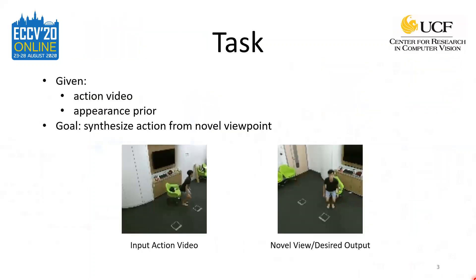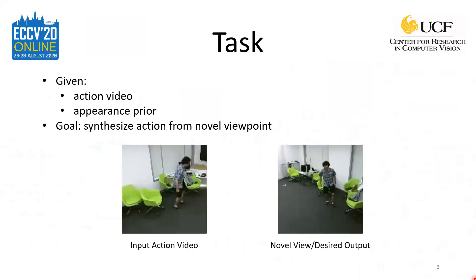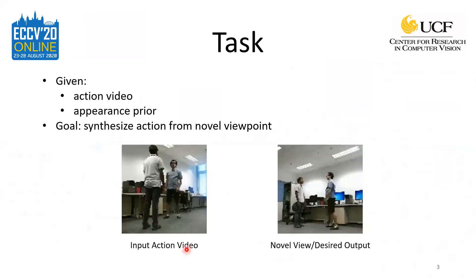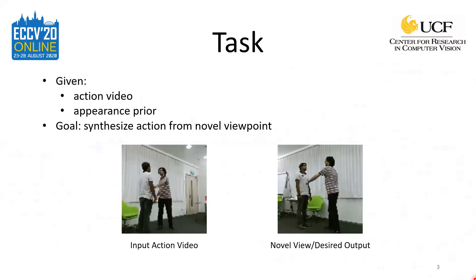The task is, given an action video, to synthesize the same action from a novel or unseen viewpoint. Since this is a challenging problem, we opt to use a single frame from the novel view as an appearance prior to aid the process. Therefore, the network input is an action video, like those shown on the left, along with a single frame from the desired view. The desired output is an action video from the novel view, like those shown on the right.